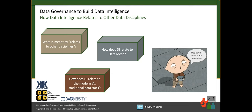Bob notes data mesh is rarely mentioned without data fabric. Dave's take on data fabric: it reminds him of the OSI networking reference model — a seven-layer model to break down networking, providing a reference model for talking about the problem and building solutions, but very few people built to those exact layers. He thinks data fabric is similarly a reference model. Bob then asks: how does DI relate to modern versus traditional data stacks?